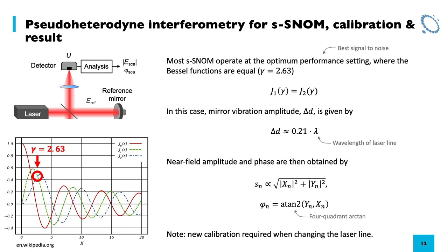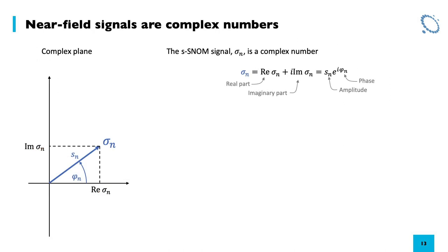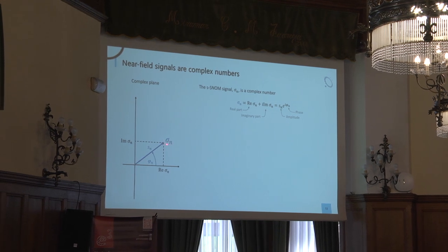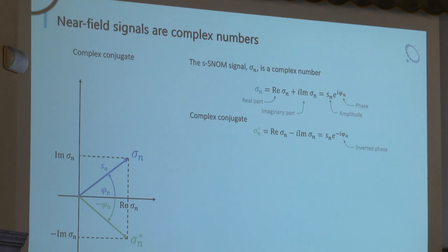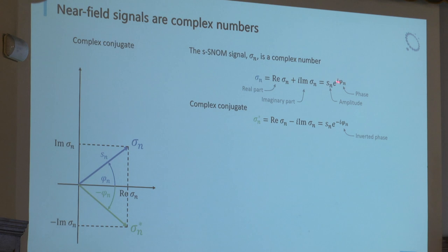That concludes the theory part. Near-field signals are complex numbers, so let me remind you of a few basics. Sigma is our scattering coefficient expressed as real plus imaginary parts — one way to write a complex number — or in terms of amplitude and phase. We can draw a complex number in the complex plane as an arrow from the origin. The length of the arrow is the amplitude and the angle is the phase. The complex conjugate has an inverted imaginary part, which mirrors the arrow at the real axis — and importantly, the phase is inverted.